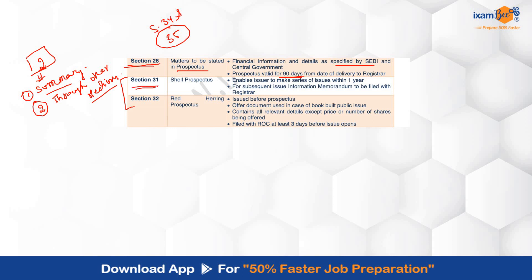Coming back to shelf prospectus — Section 31 provides related provisions. Shelf prospectus is something kept on the shelf and taken out when needed. It is that type of prospectus that can be used by companies that are into frequent issue of shares — as and when they need. It enables issuers to make a series of issues within a period of one year. Whatever changes from the very first issue to subsequent issues will be detailed, since preparing and releasing a full prospectus every time is not feasible. So, shelf prospectus is there for companies into frequent issues.